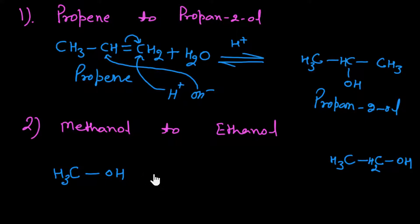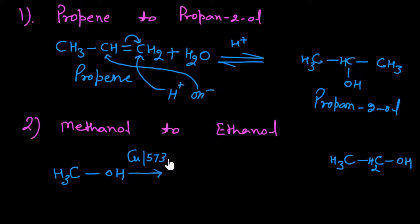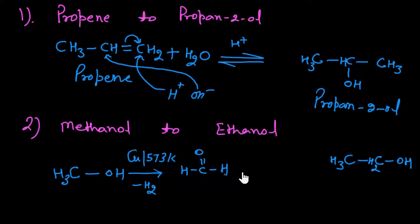From methanol we need to convert it into a carbonyl compound — specifically an aldehyde (methanal). To convert methanol to methanal, we use an oxidation/dehydrogenation reaction with copper (Cu) at 573 Kelvin temperature. This dehydrogenation in the presence of copper at 573K converts methanol into methanal (HCHO).